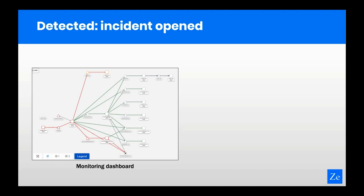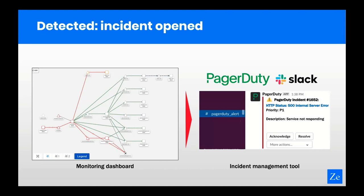In many environments, monitoring is integrated with an incident management tool, with rules that automatically trigger incidents when things go wrong. Here I'm showing a PagerDuty incident that has been created and shows up in a Slack channel. But now it's time for the tough part: we've detected that there is a problem, but what was the root cause?